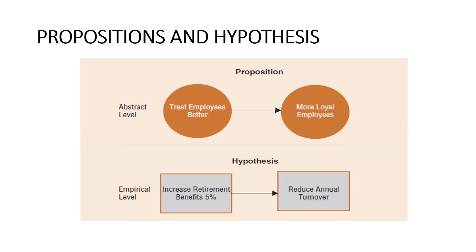When we talk about hypothesis, you have to use an empirical level of variable to measure treating employees better. For example, how do you measure treatment? If you increase retirement benefits, that means better treatment. And how do you measure loyalty? By annual turnover — if employees don't leave, they are loyal to the organization. So at the empirical level, you test the propositions, and the proposition gets converted into a hypothesis.